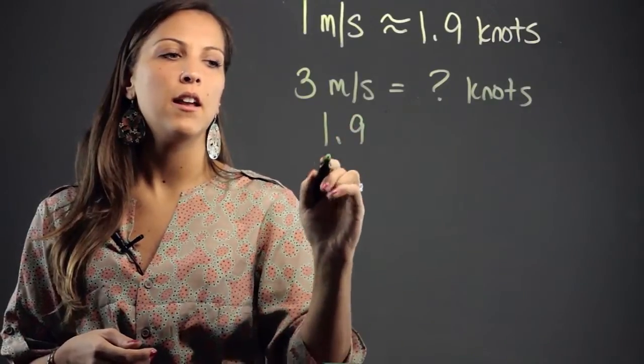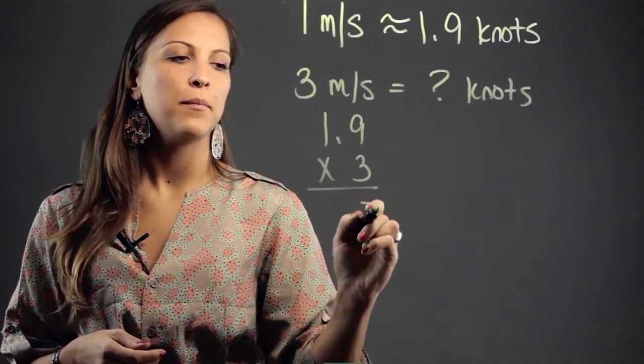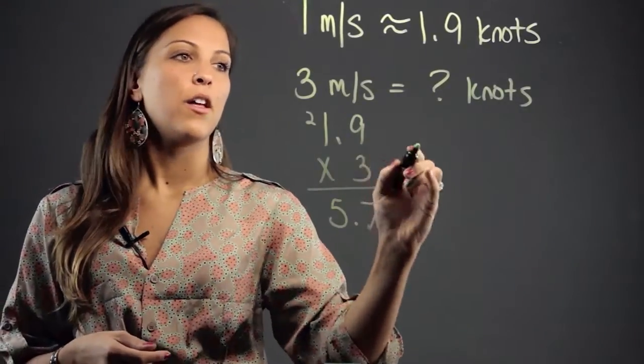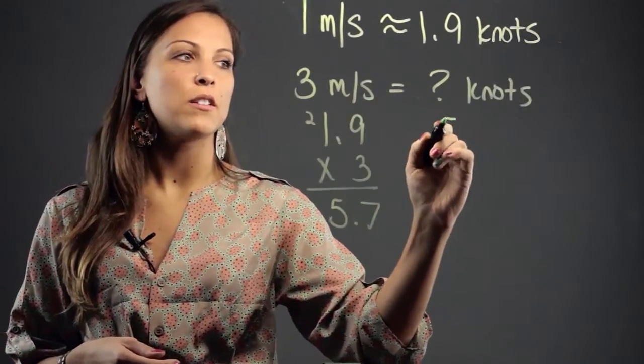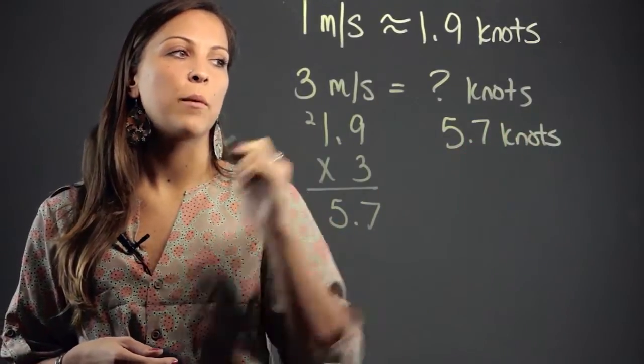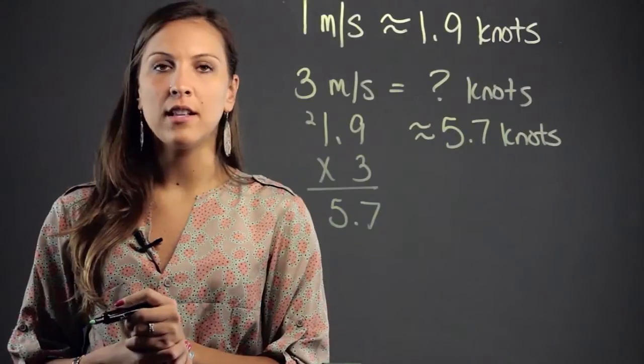So we're going to do 1.9 times 3 and we're going to get 5.7, meaning that 3 meters per second are equivalent to 5.7 knots, or approximately equivalent to 5.7 knots.